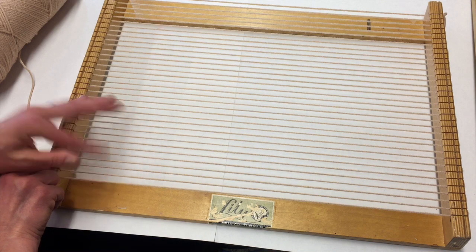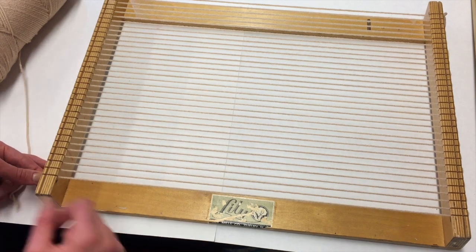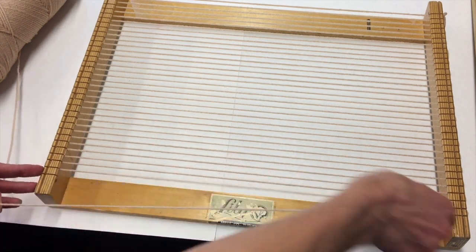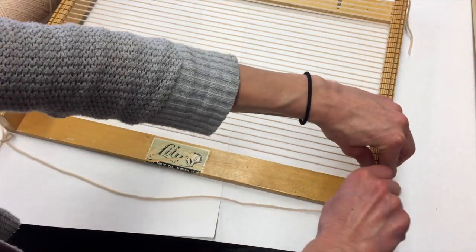If you have an odd number like I do, just go ahead and undo your last string, and I'll tie a knot on this side.